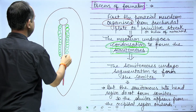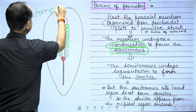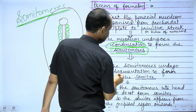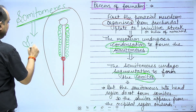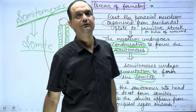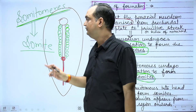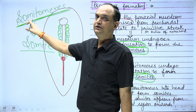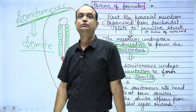The para-axial mesoderm gives rise to a structure known as somitomeres. Then the somitomeres show segmentation, and these segments are known as somites. So the process is: para-axial mesoderm organizes itself on both sides of the developing notochord, undergoes condensation to form somitomeres, and then somitomeres show segmentation to form somites.